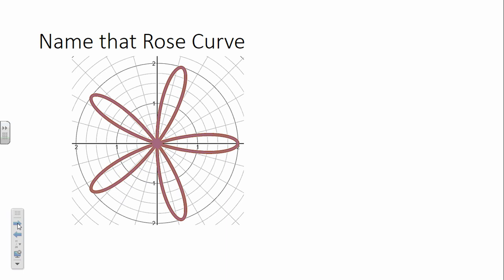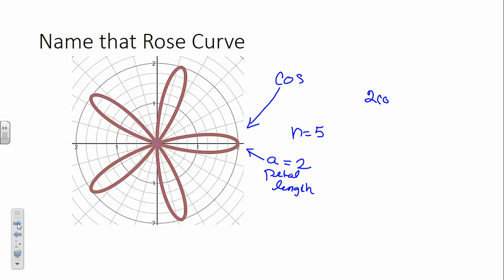Let's check if we can figure out an equation from a given graph. If it's cosine because it starts at the polar axis, and A equals 2 because of the petal length, and N equals 5 because we have 5 petals, then the equation is R equals 2 cosine 5·theta. It's hard to see the scale on the graph, so I'll make it bigger next year.